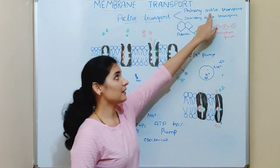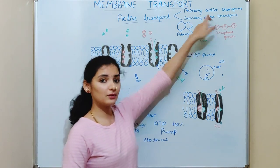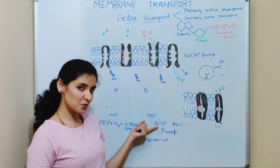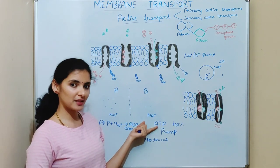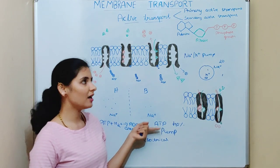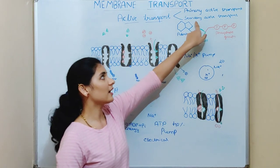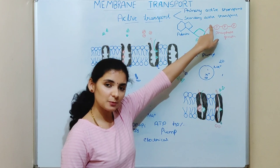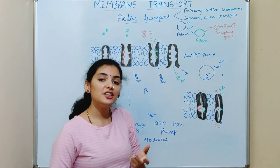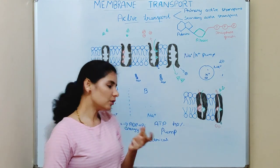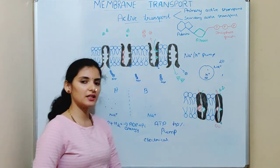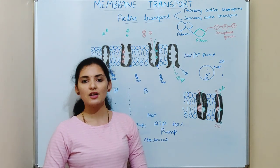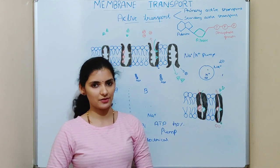In primary active transport, ATP is used directly as a source of energy. On the other hand, in secondary active transport, the energy stored in the electrical gradient is used as the source of energy.